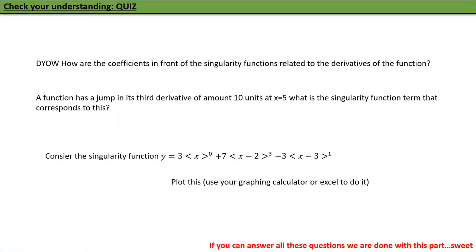Check your understanding: describe in your own words how the coefficients in front of singularity functions are related to the derivatives of the function. A function has a jump in its third derivative of 10 units at x=5 — what is the singularity function term? Now consider y = 3·⟨x⟩^0 + 7·⟨x−2⟩^3 − 3·⟨x−3⟩^1 — plot this, using Excel or a graphing calculator. Excel is better; learn how to use it. If you can do all these questions, we are done with this part.